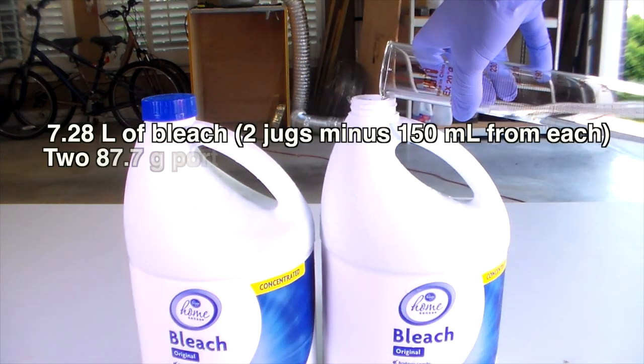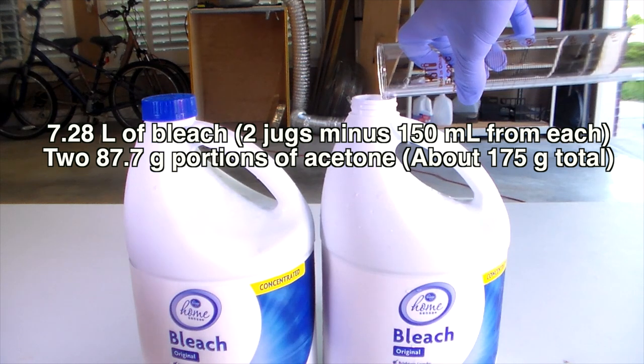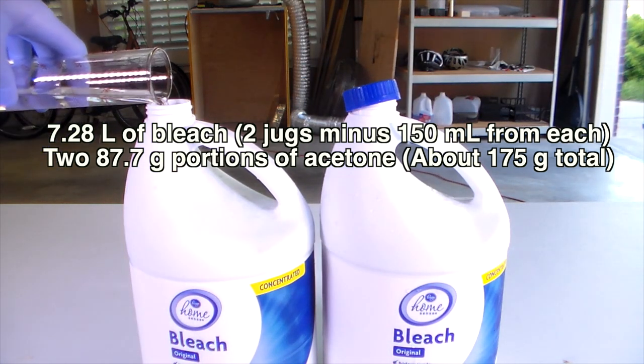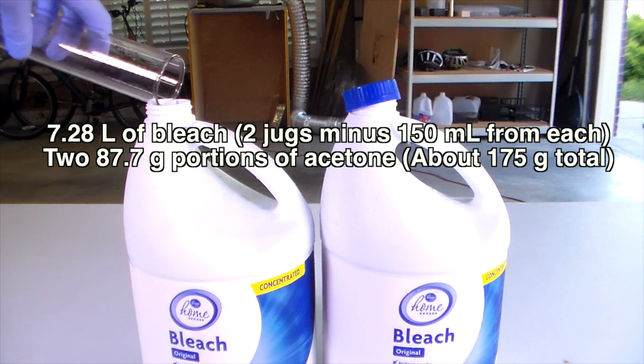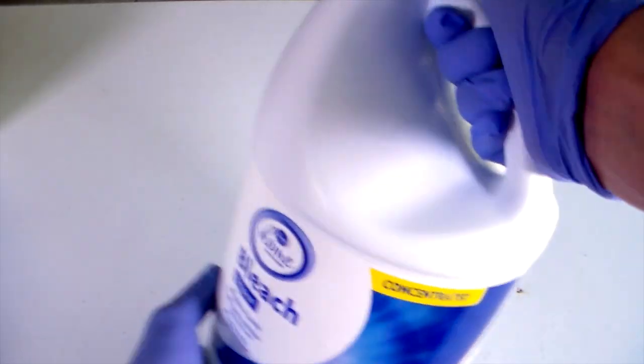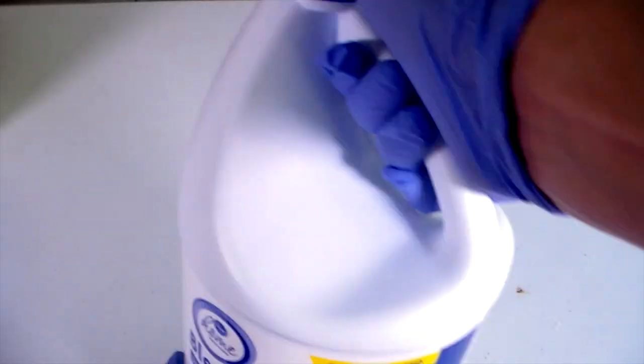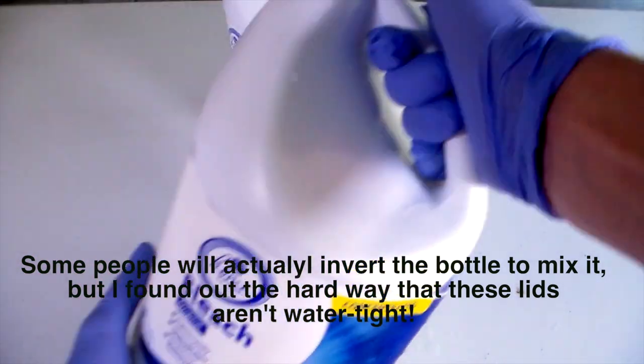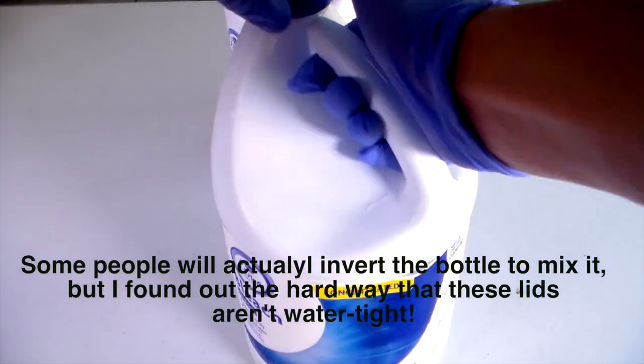In total, 3.02 moles of acetone was measured out. This was added in two separate portions, each weighing 87.7 grams, or about 110 milliliters. Once the acetone was added, the bottles were capped and shaken thoroughly. This reaction is incredibly exothermic, and that's why we needed to cool the bleach to below 0 Celsius.